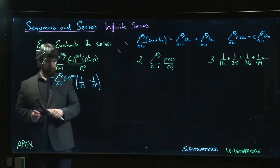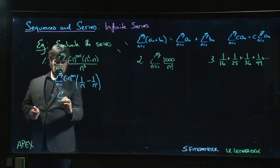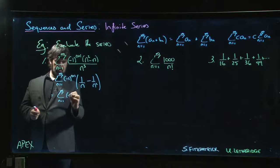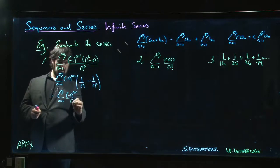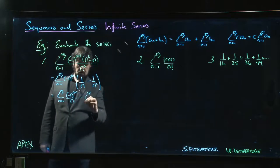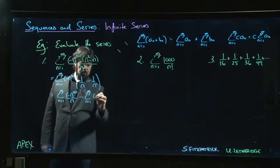So we can split it up like that. Then we can write this, if we multiply that through and split this up into two series, we can write it like: sum from n=1 to infinity of (-1)^(n+1)/n minus sum from n=1 to infinity of (-1)^(n+1)/n^2.